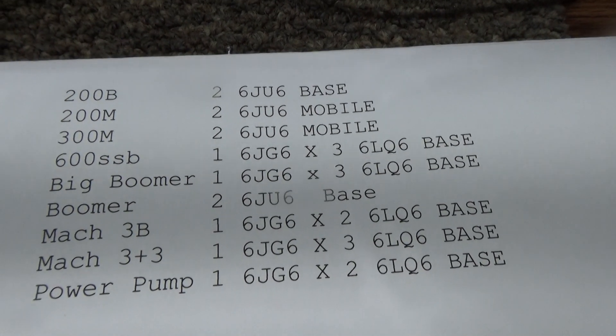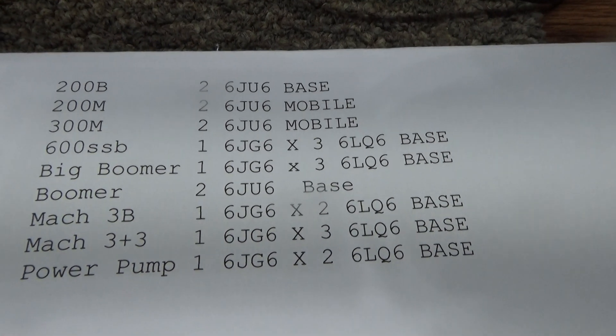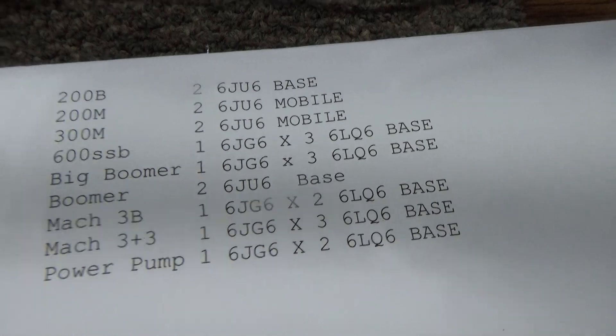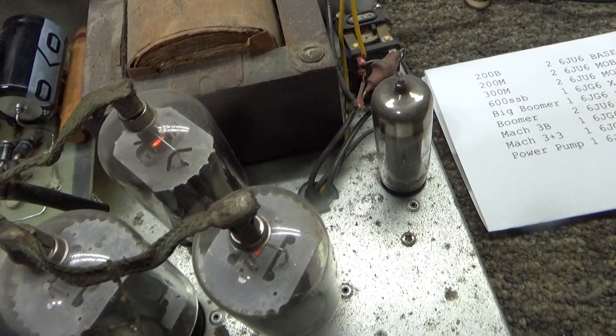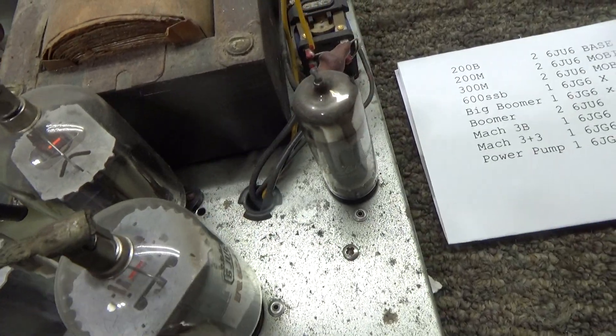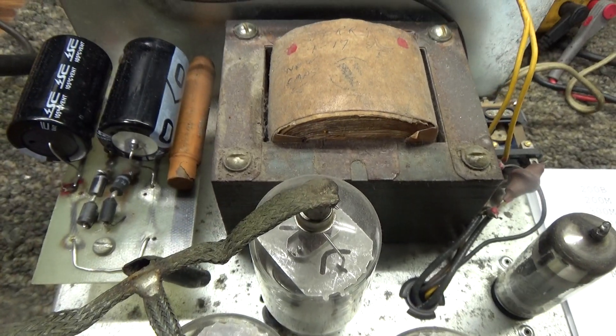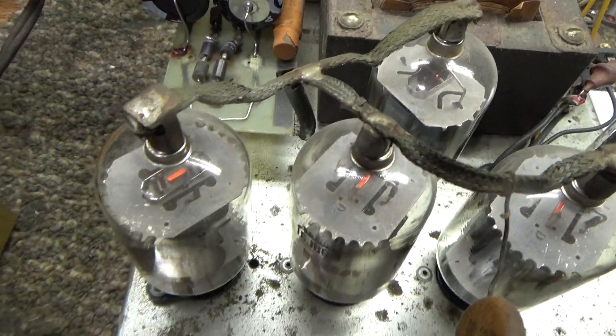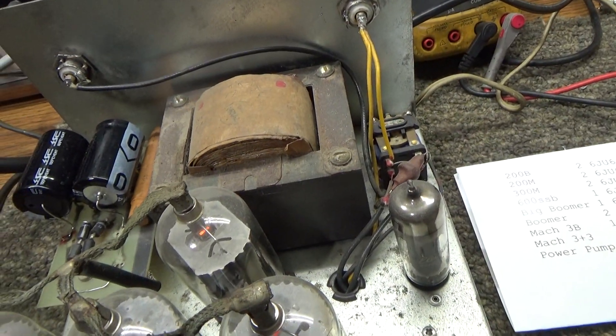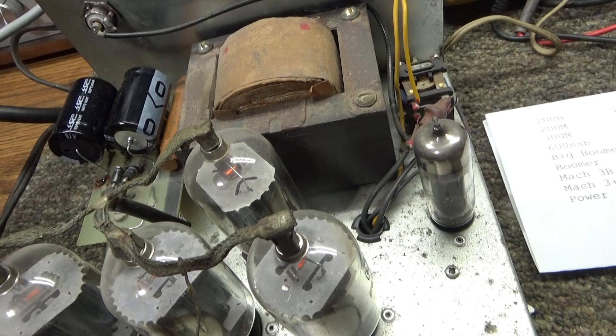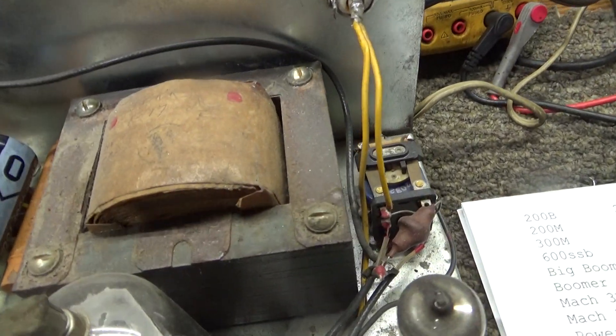This one's at the top, it's marked a 200B, so I guess it's supposed to have just two 6JU6 tubes in it and the tubes are outputs, are JU6. But I think somebody modded it and put two more in it. I think the one in the back there close to the transformer and the one on the left here have a non-factory socket in it.